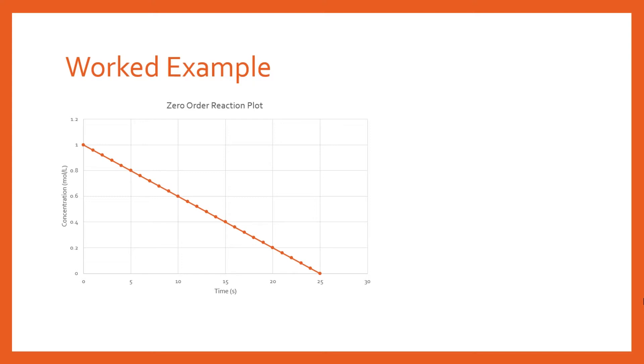The rate isn't changing. If you find the gradient of this graph, you get a constant value, and that's how we can tell it's zero order.